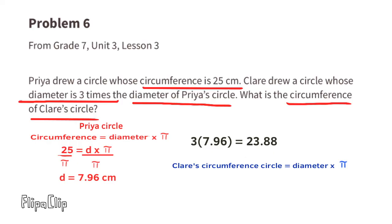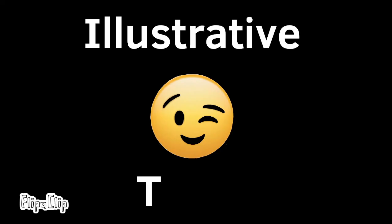Now we find the circumference of Claire's circle: diameter times pi equals 23.88 times pi, which is approximately 75 centimeters. Take a moment to subscribe to my YouTube channel, give this video a like, and leave a comment below. Thanks for watching and I'll see you next time.